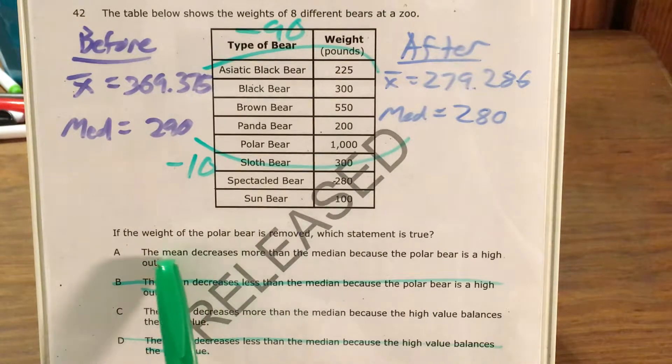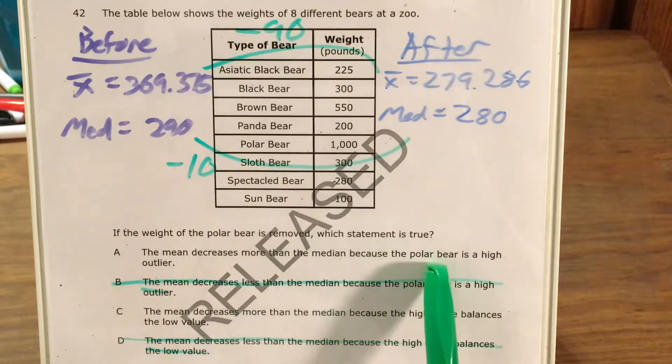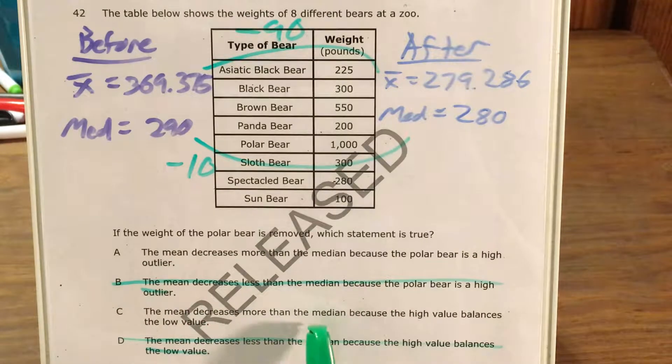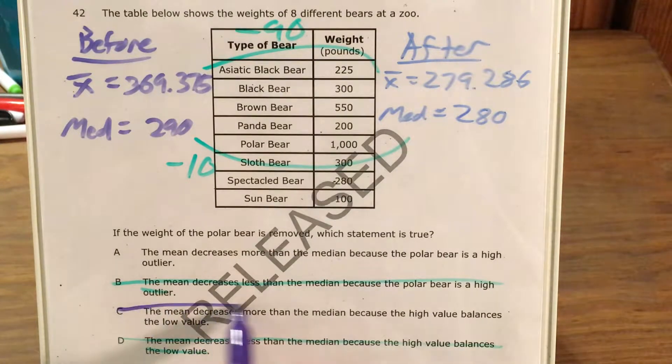So now we have the mean decreases more than the median because the polar bear is a high outlier and the mean decreases more than the median because the high value balances the low value. All right, so the phrasing of this choice doesn't even make sense. And if it doesn't make sense to you, it's not because there's something you don't know. It doesn't make sense because it just doesn't. So C is out.